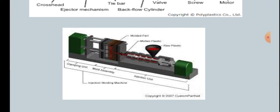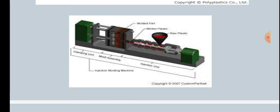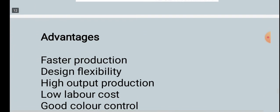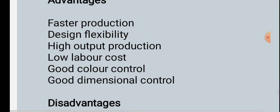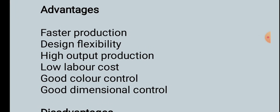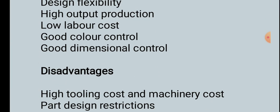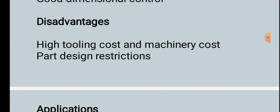Advantages of injection molding: faster production, design flexibility, high output, low labor cost, good color control, and good dimensional control. Disadvantages: high tooling and machinery cost, and part design restrictions. Applications include automotive components, electronic components, and toys. This concludes the topic of polymer processing.